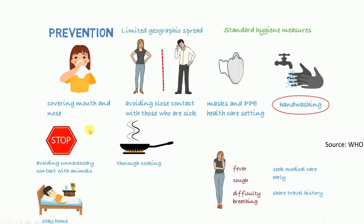Since this coronavirus began from animals, it is better to avoid unnecessary contact with animals. If you consume meat, it is highly recommended that you cook it very thoroughly, as that will kill the virus. If you are feeling unwell, stay at home so you don't transmit the virus to healthy persons. If you have symptoms like fever, cough, or difficulty breathing, it is highly recommended that you go to the hospital and see a doctor.